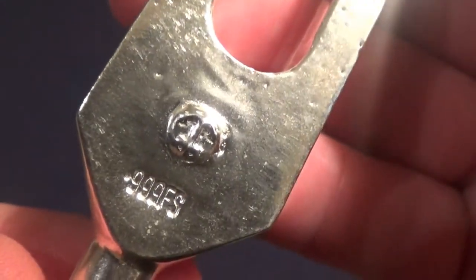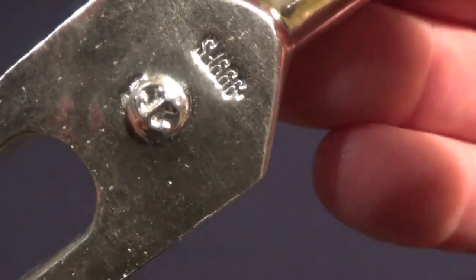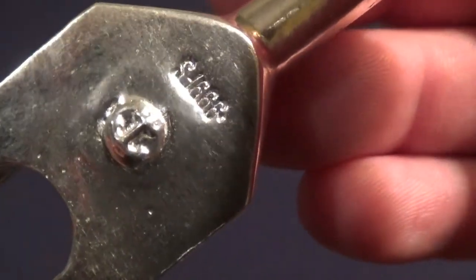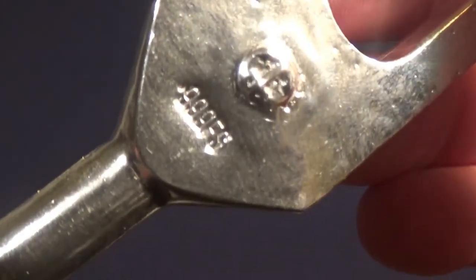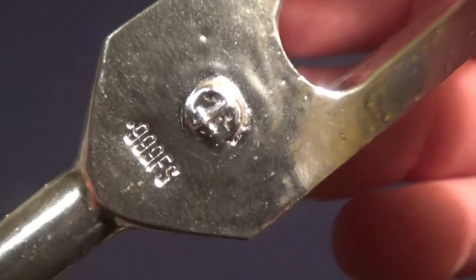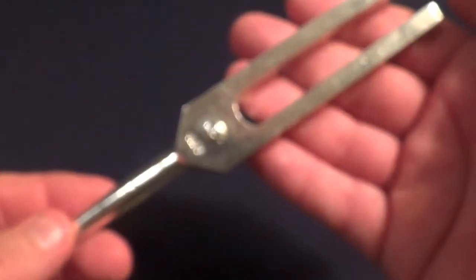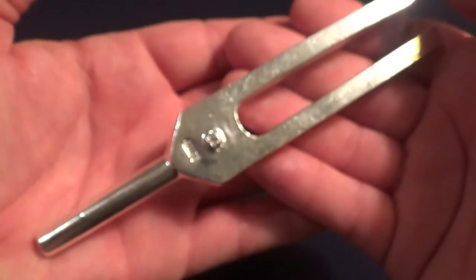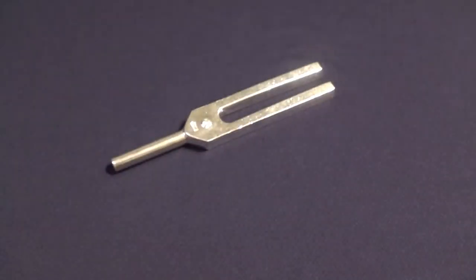First of all, let's take a look at Bernie's mark - the anchor. Can we see that? There's his anchor, and then 999 fine silver stamp, which is a really nice looking piece. It's awesome.